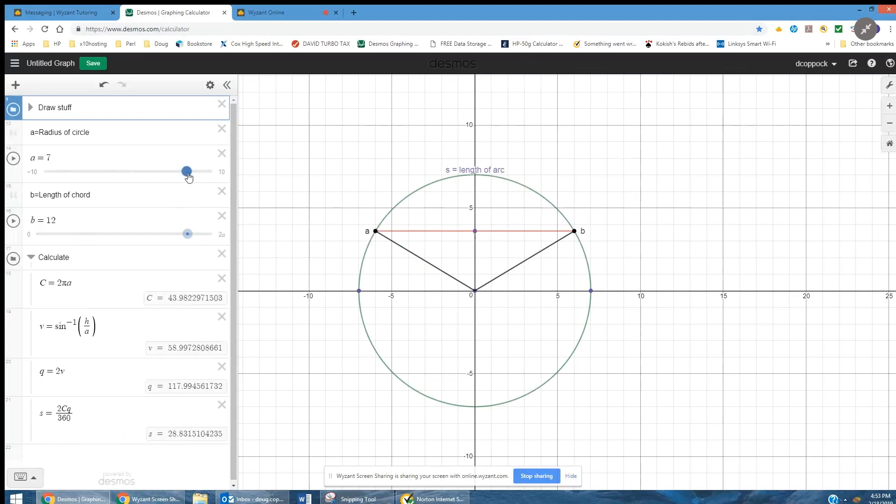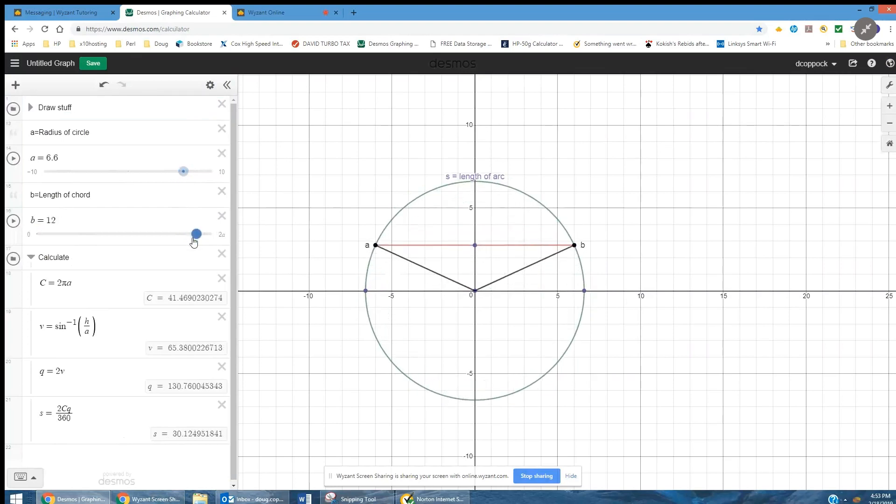But the cool thing about this is that I can vary the radius of the circle, and I can vary the chord length. And you can see you get different arc lengths.